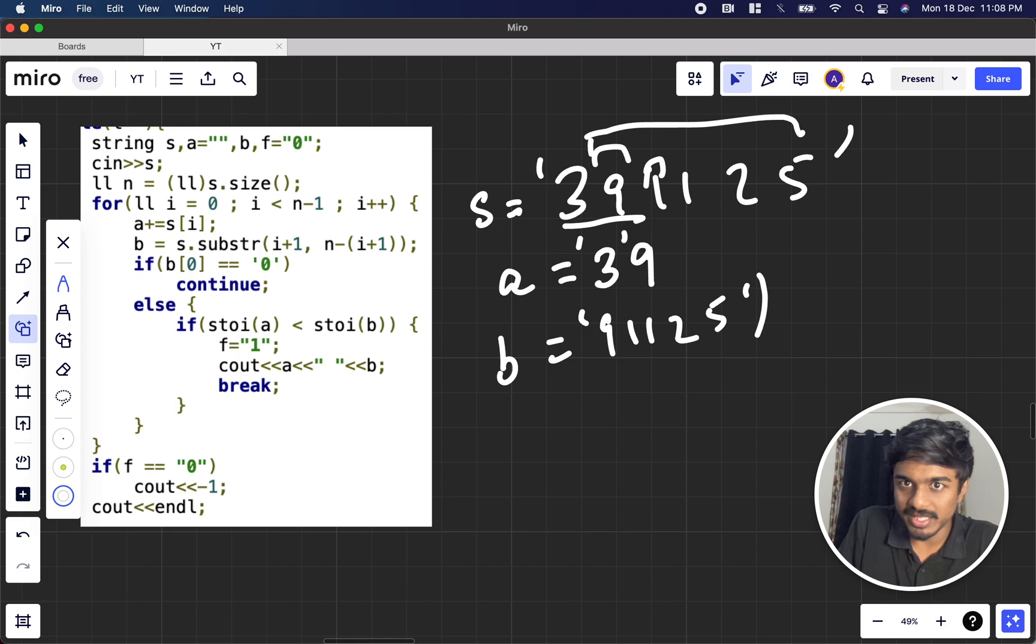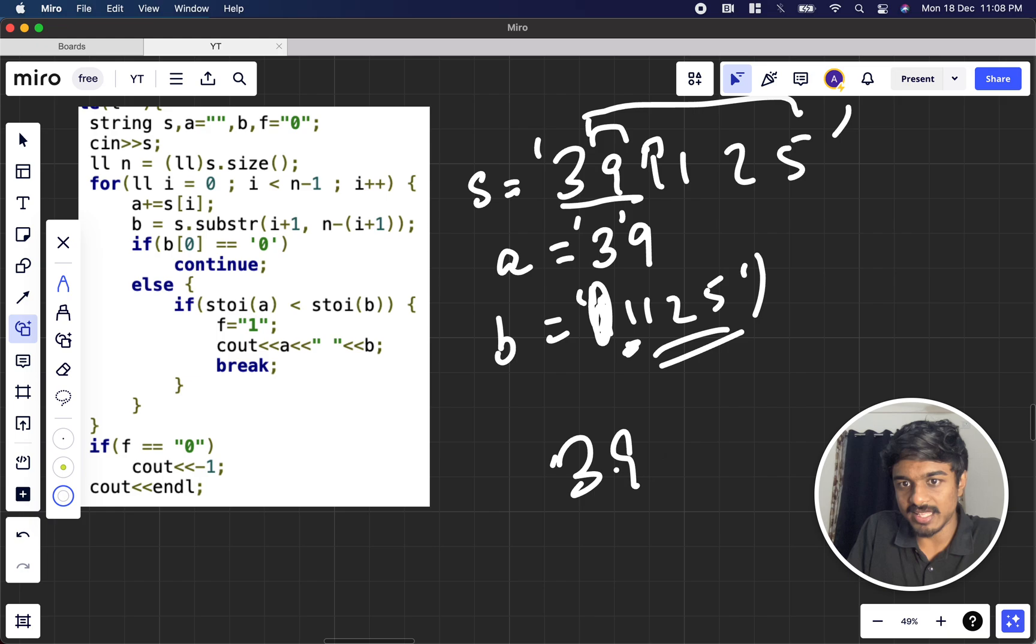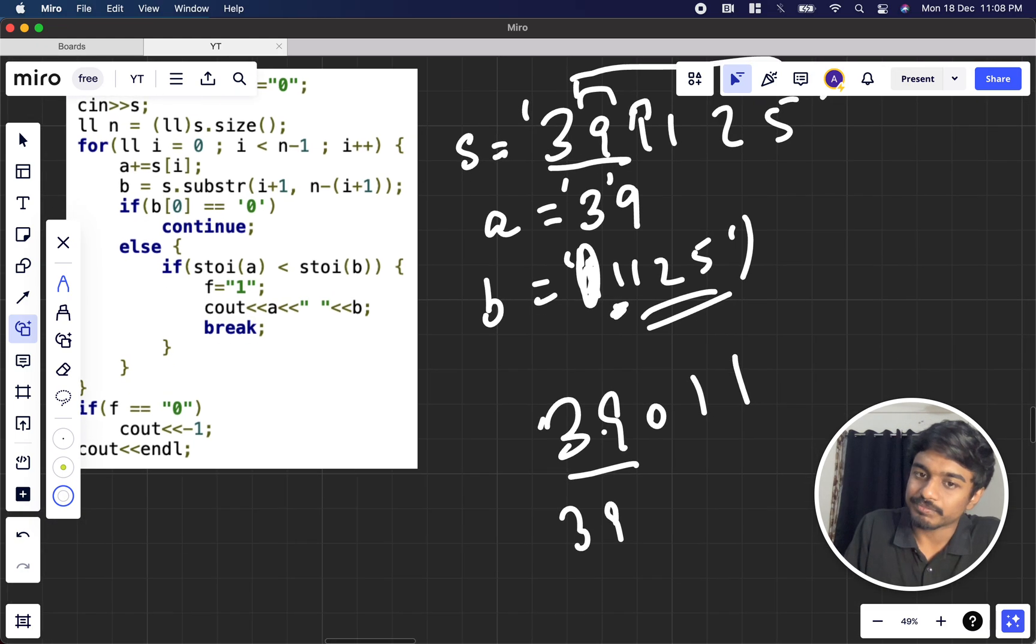In case if it is not possible, you just go again and append the a value. 39 can come here, it goes to the i+1 element, that is from 1 to n minus i plus 1, which is 1125. Again you compare if 39 is less than 1125. If b[0] equals '0', that means suppose 39 and 011 comes. In this case, 0 is not allowed, so you should not check for a less than b condition here, so you continue.